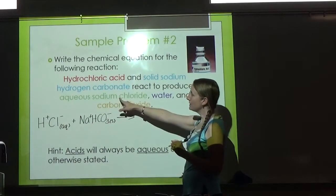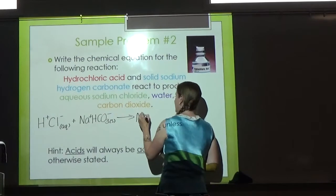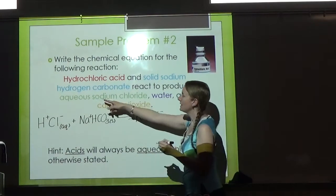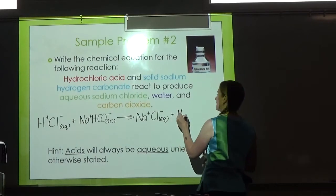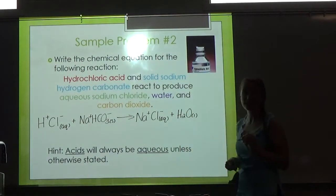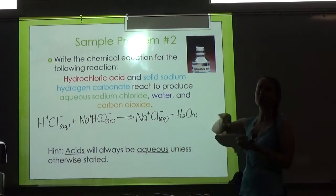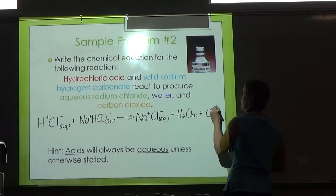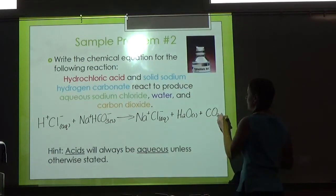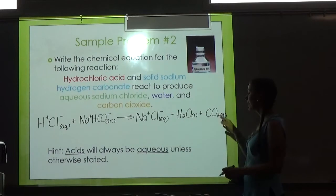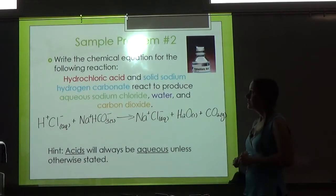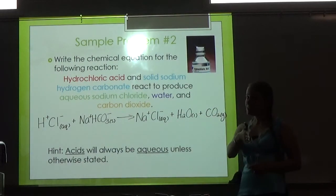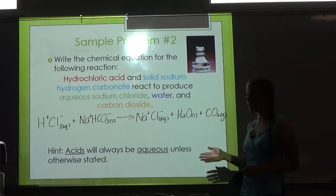'React to produce,' so I'll put my arrow. Aqueous sodium chloride: Na is positive 1, Cl is negative 1, so no additional subscripts—it is aqueous. Then water: if it doesn't specify the form of water, we can assume it's a liquid. If it's going to be a gas, it will call it steam; if a solid, it will call it ice. Carbon dioxide: carbon plus O2—its natural state is a gas, so since it didn't specify the state of matter, I can assume it's a gas. When you write the sentence to me, you need to put all the states of matter.